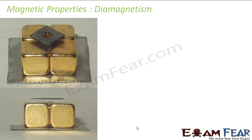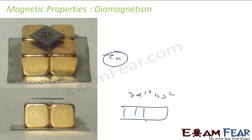Diamagnetic substances are those that do not have any unpaired electrons. Zinc is one example of a transition metal that has no unpaired electron. Its electronic configuration is 3d¹⁰, 4s². Drawing it out: 1, 2, 3, 4, 5, 6, 7, 8, 9, 10 — it does not have any unpaired electron, so zinc is diamagnetic.